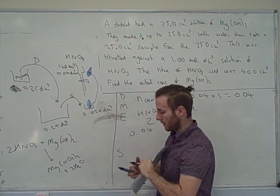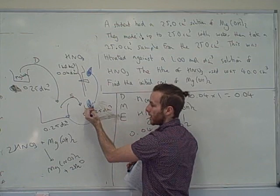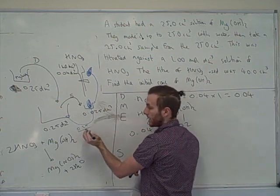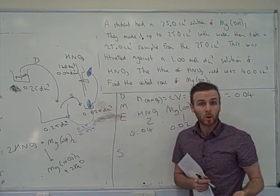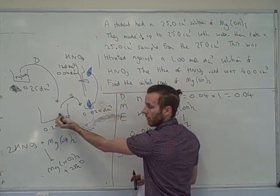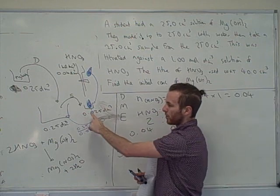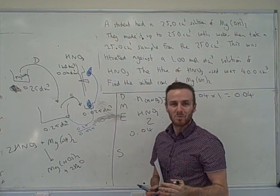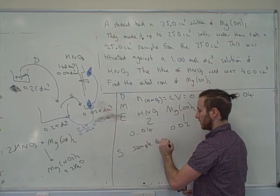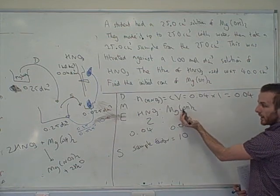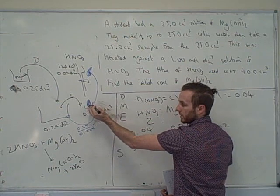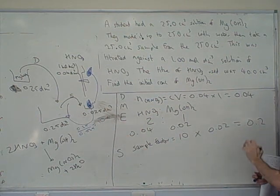Calculate the sample factor: bigger volume ÷ smaller volume = 0.25 ÷ 0.025 = 10. We're going from the smaller sample to the bigger 250 cm³ solution, so there will be more moles — we multiply. Moles of Mg(OH)₂ in the 250 cm³ solution = 0.02 × 10 = 0.2 moles.